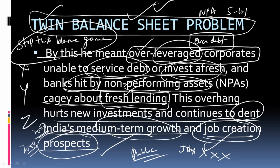The NPA problem is not due to either government — maybe five to ten percent yes, where ineligible people got loans due to political influence and couldn't repay. But ninety percent stems from the golden period before the recession. Around 2007–08, every country was growing at the fastest pace — GDP was surging — so everybody was optimistic. Banks gave loans based on very optimistic business projections. Then the recession struck, businesses fell, companies couldn't repay, and banks couldn't give further loans.